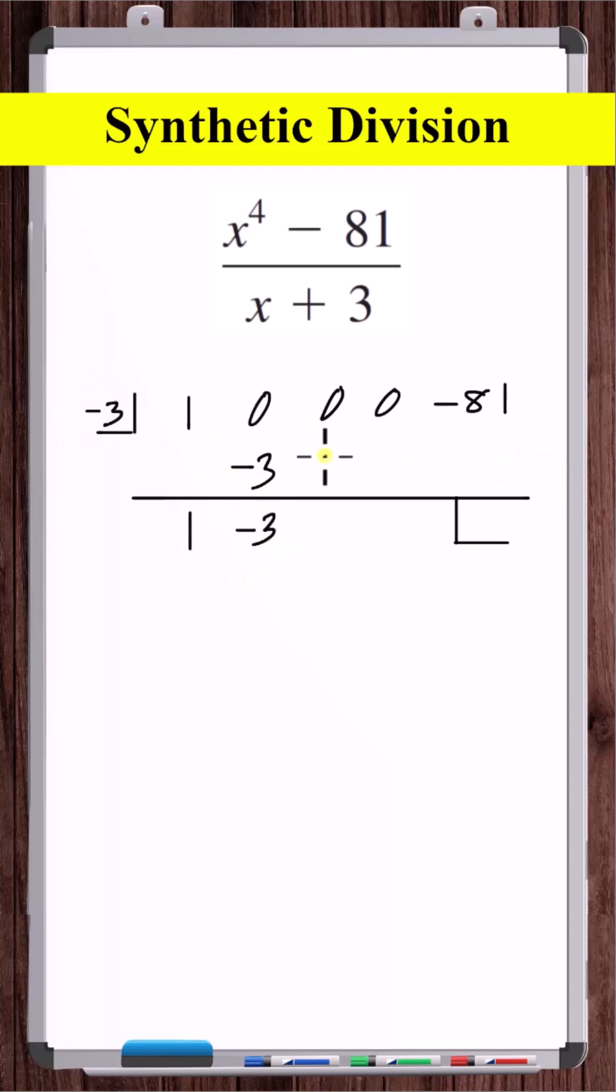Now multiply minus three times minus three, you get positive nine. Add these two numbers. Nine times minus three is minus 27. Zero plus minus 27. Minus 27 times minus three is positive 81. Minus 81 plus 81 is zero.